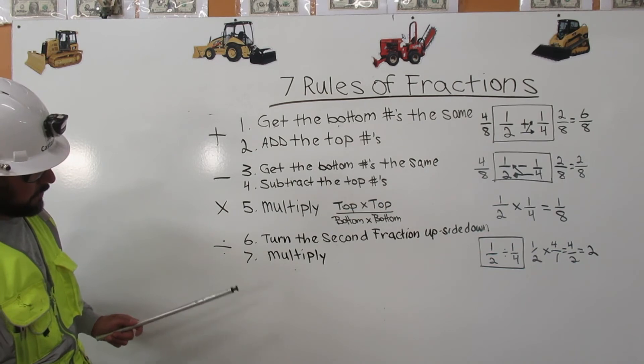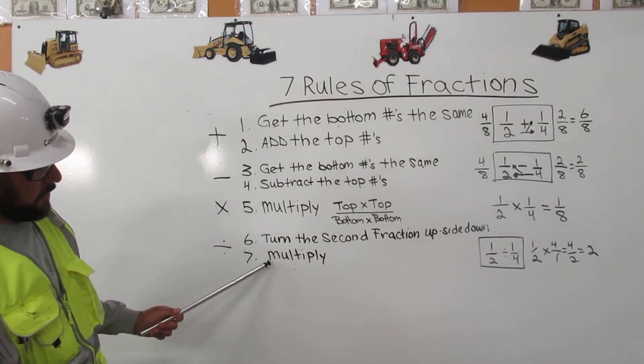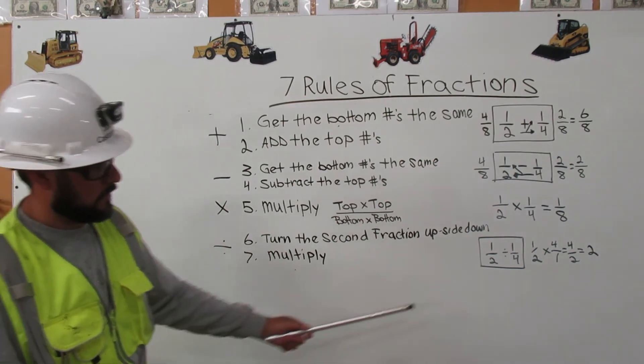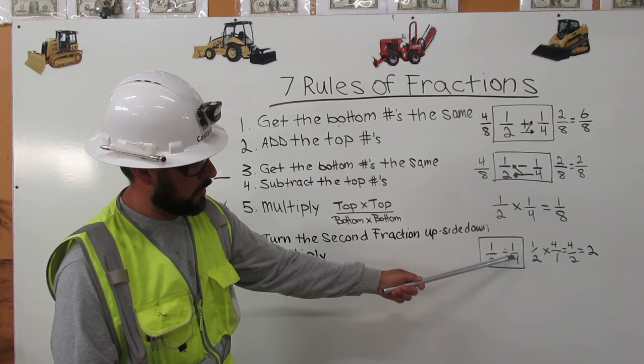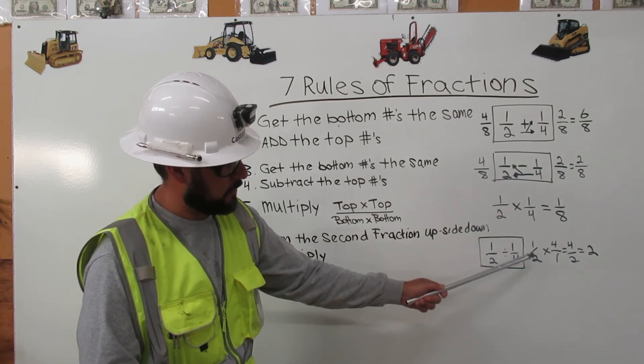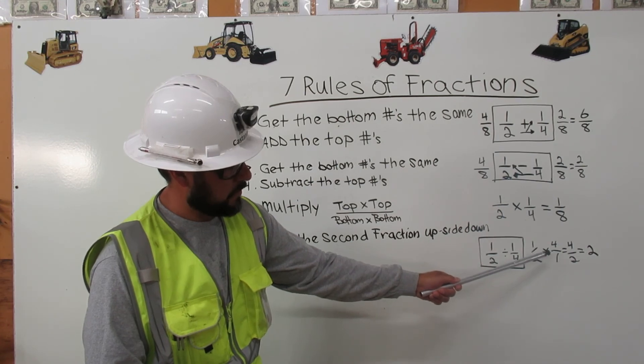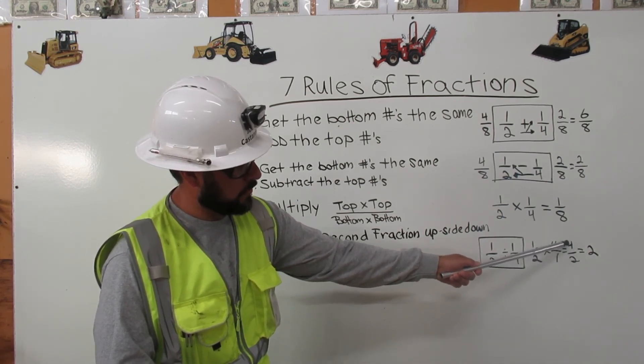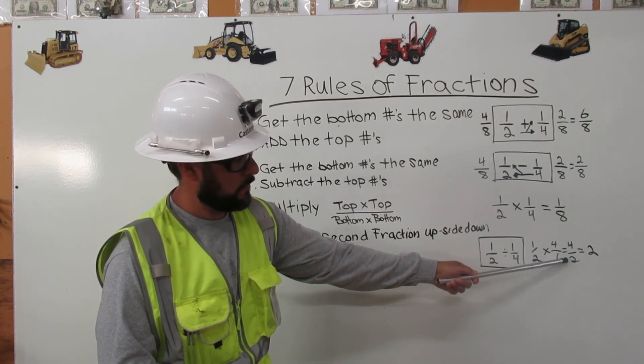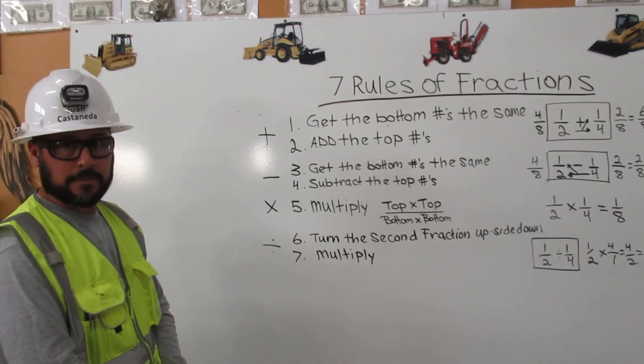Division. Turn the second fraction upside down, then multiply. Half divided by one-fourth. Box it. One-half times four over one equals four over two. The answer is two. Thank you.